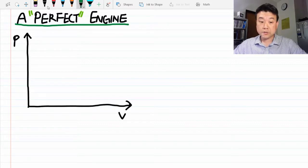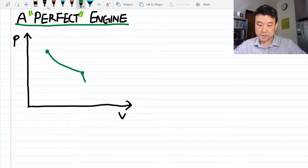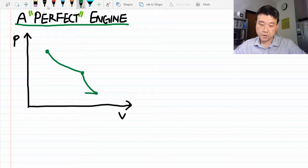So let's start with an example of an engine that somebody already tried to make perfect. That would be the Carnot cycle. You have seen it before. It consists of isothermal expansion, adiabatic expansion, isothermal contraction, and adiabatic contraction.